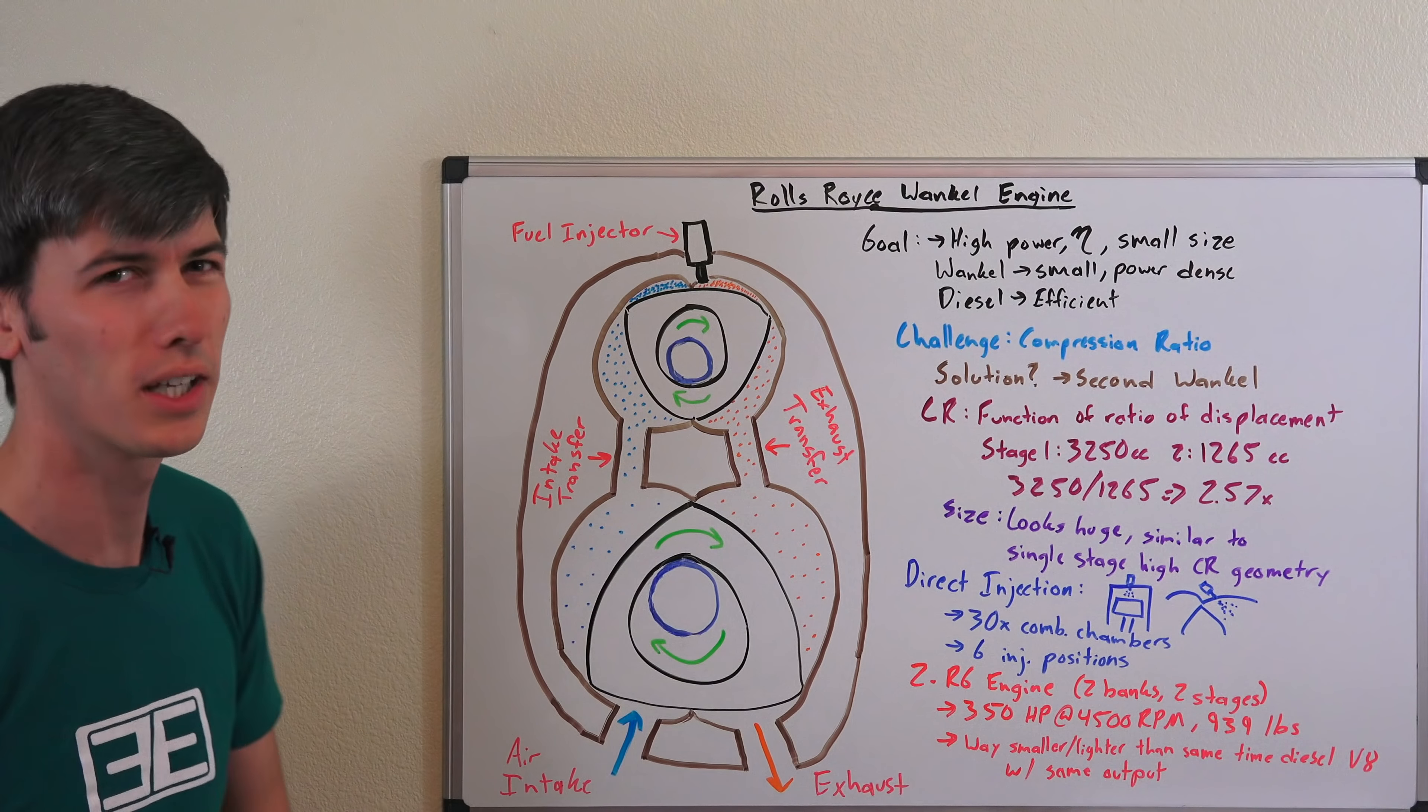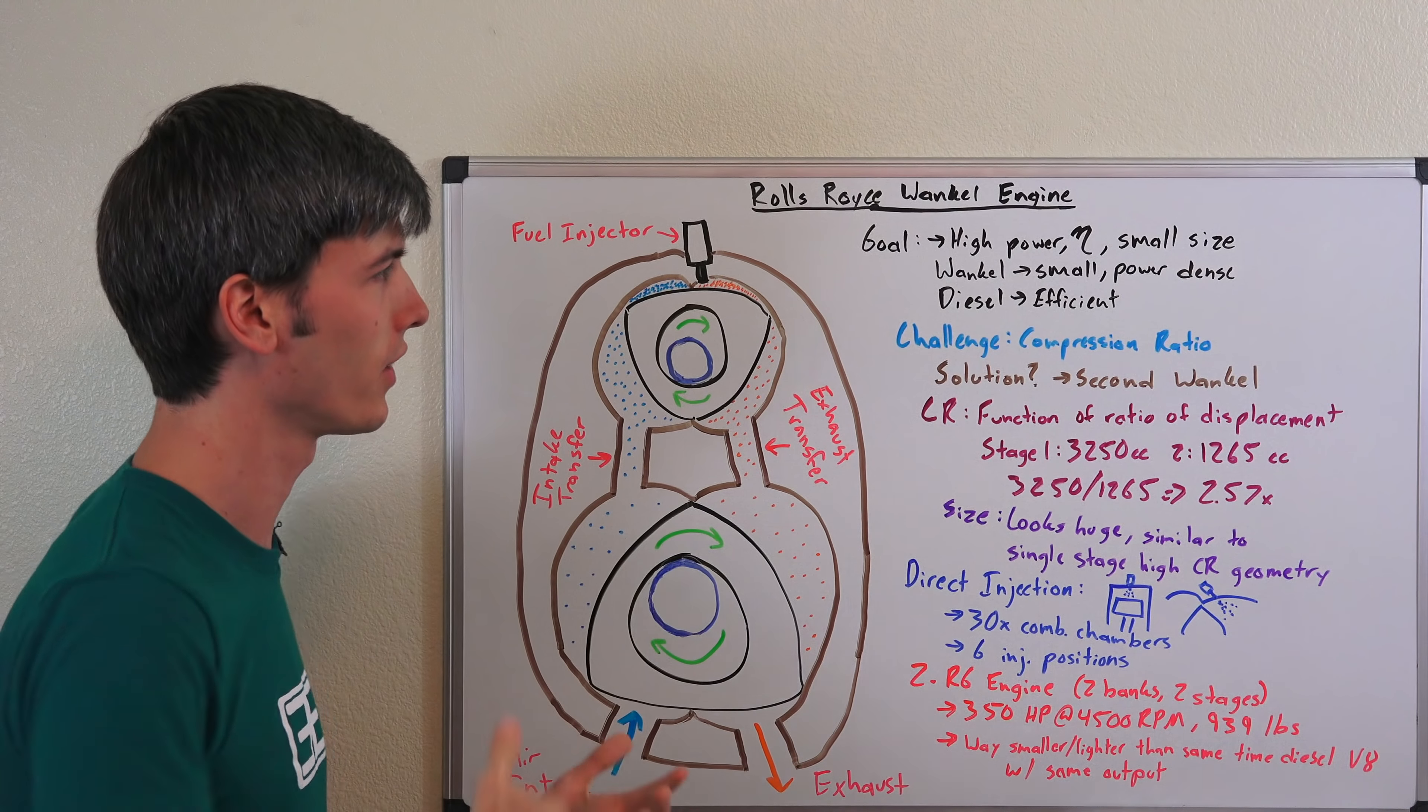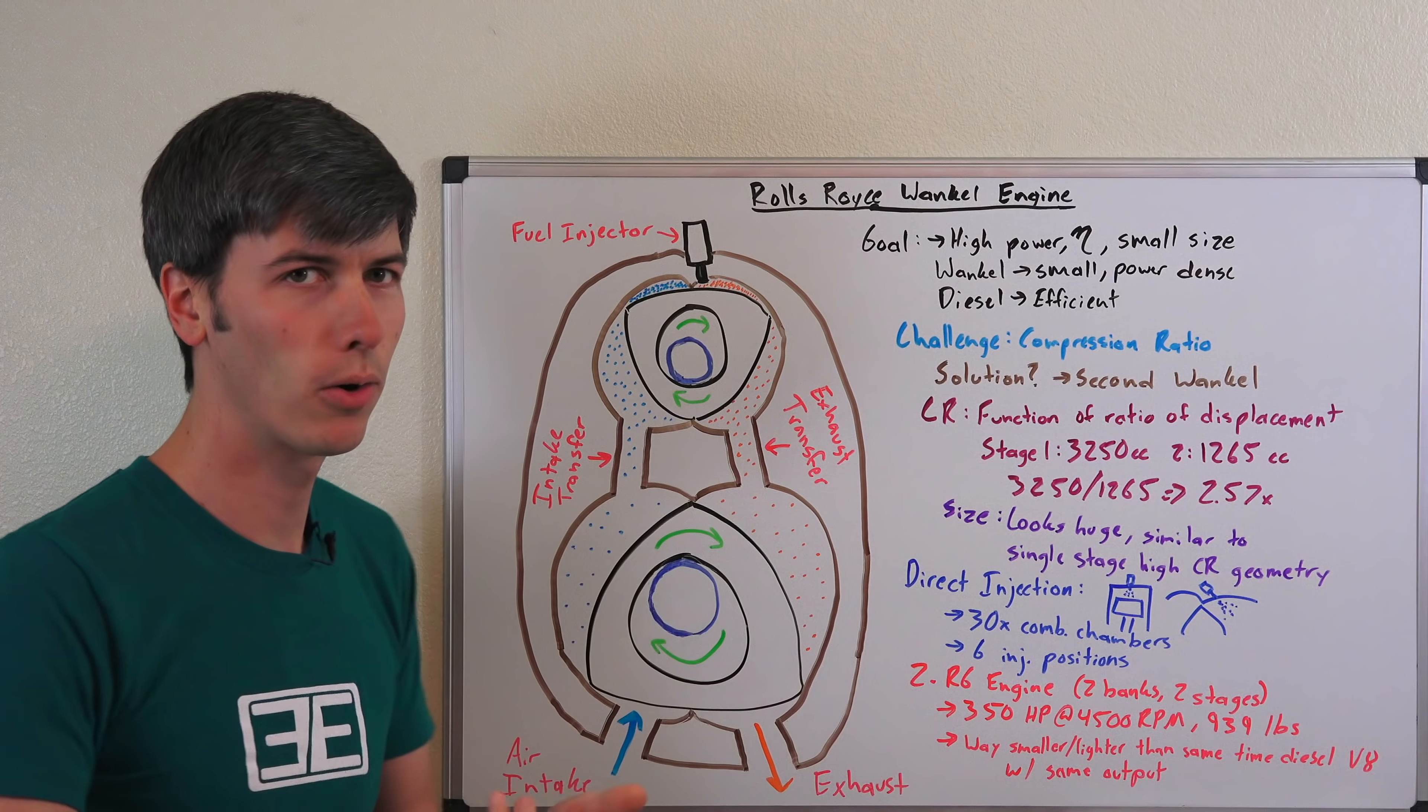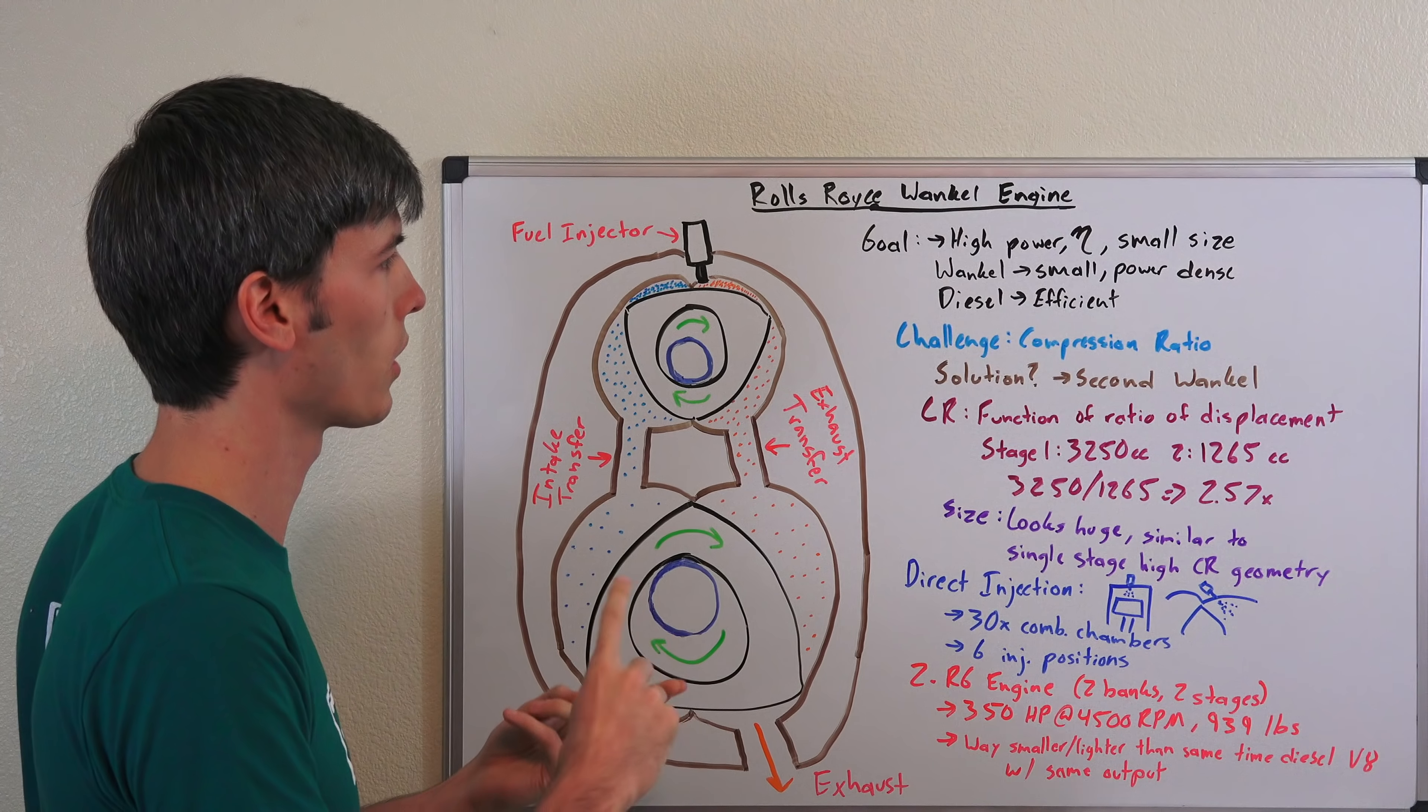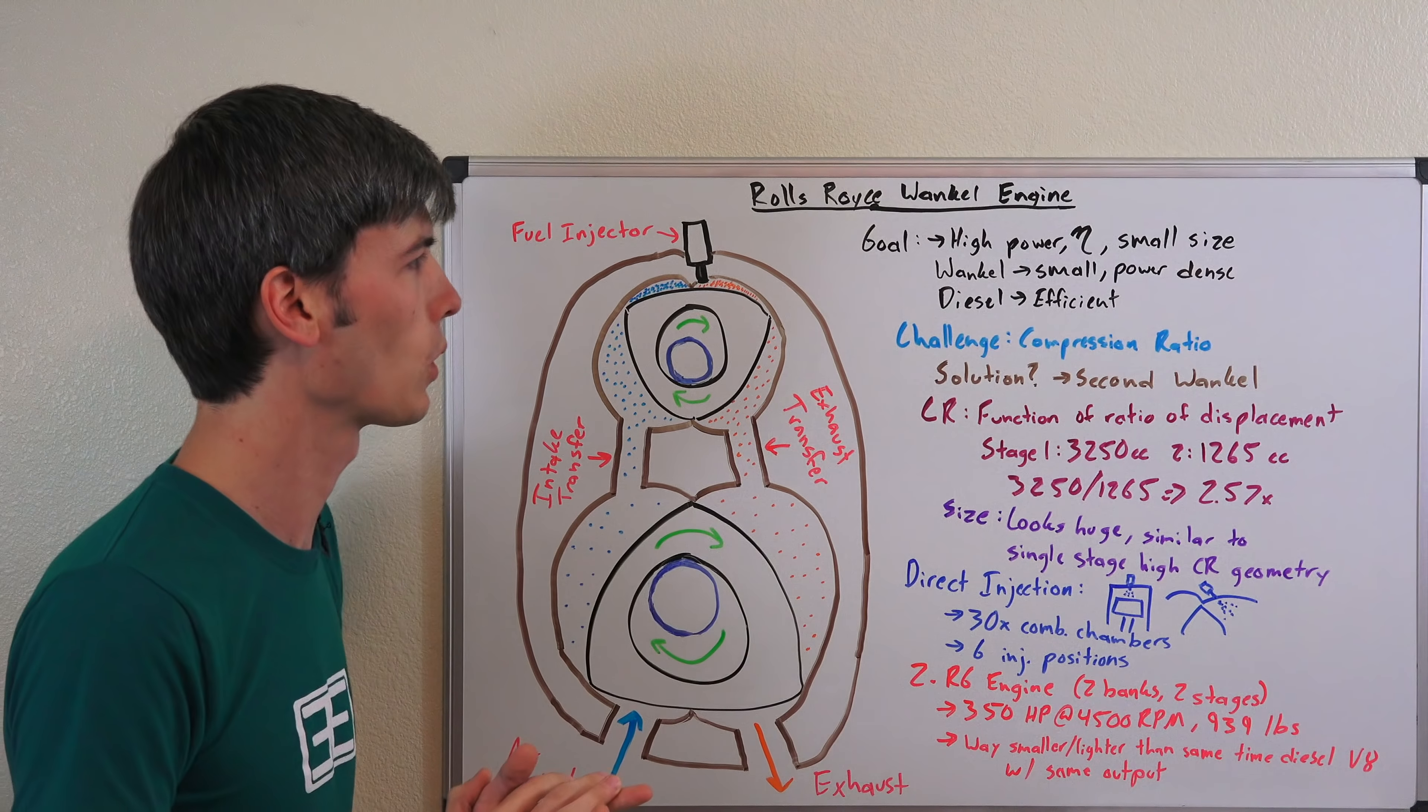So that's what we're going to be talking about here. Basically, back in the 1970s, Rolls-Royce wanted to make this as a military engine, and their goal was high power, high efficiency in a very compact size. Wankel engines have the benefit of being small and power-dense. Diesel engines have the benefit of being efficient, so combining all of that into one amazing engine.